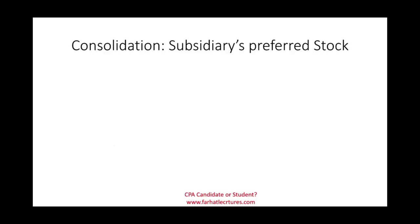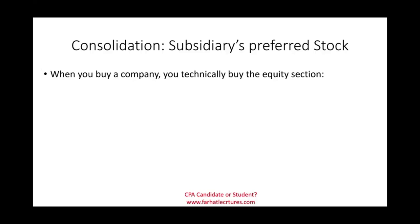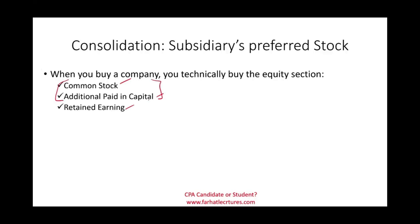Welcome to this session on the consolidation process when the subsidiary has preferred stock on its equity section. When you buy a company, you technically buy its equity section. Generally speaking, there are three types of accounts we have to deal with: common stock, additional paid-in capital, and retained earnings. Common stock and additional paid-in capital is what investors invested in the company, and retained earnings is the amount the company earned and kept over the years. Those are the two main sections of stockholders' equity.